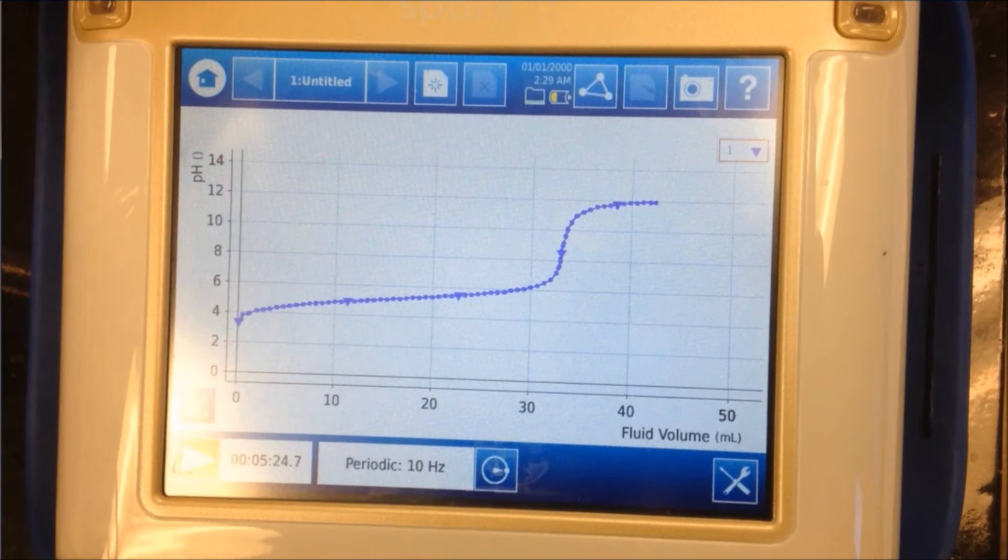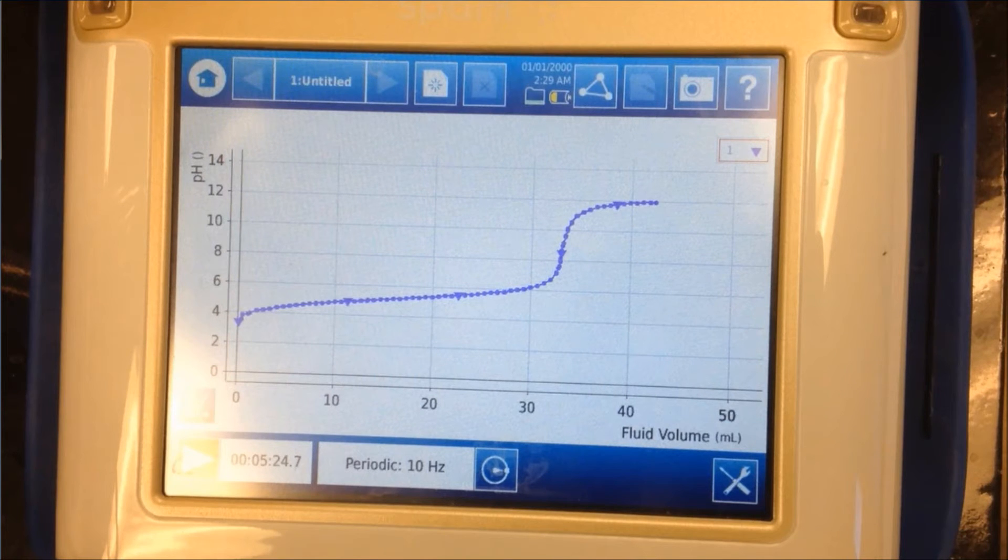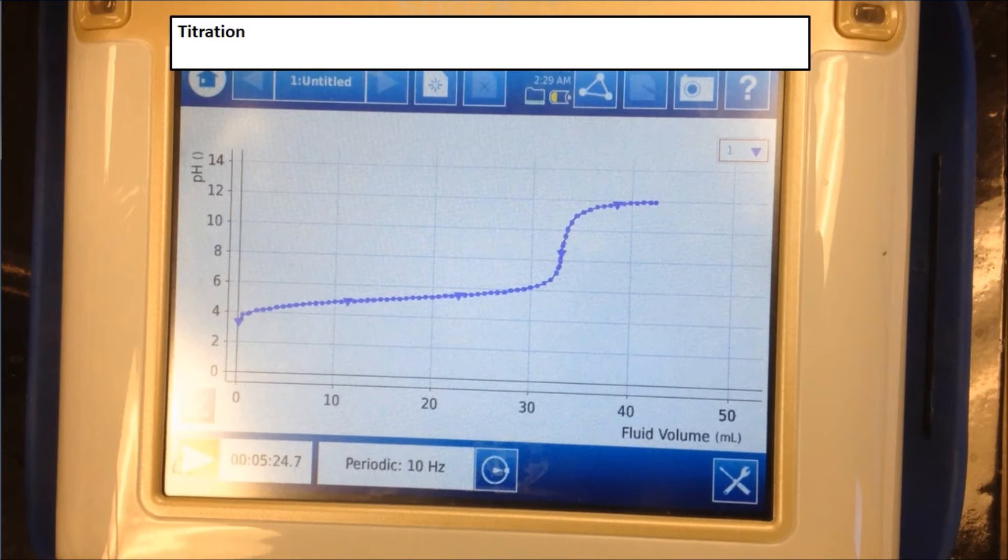Here we have the titration curve for our experiment. A titration curve is a curve that compares the pH to the amount of titrant added. The titrant would be what goes into the buret. The titrant in our case is the NaOH. On our graph here, the amount of titrant added would be on the x-axis right here, and the pH would be on the y-axis, which is right here.